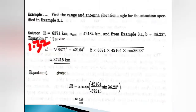Next, find the range and antenna elevation angle for the situation specified in example 3.1 — the previous example. The range (small d) and elevation angle (el) are asked. Using the given formulas and substituting the values, we can easily find the distance and elevation angle.